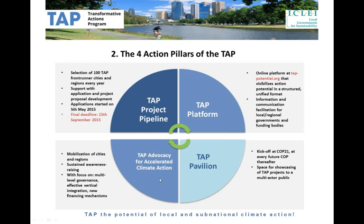Finally, the TAP advocacy for accelerated climate action will build on previous achievements in local climate advocacy and diversify and strengthen it in various ways. This work will seek to raise awareness of the potential of transformative local climate action, deepen the dialogue with national governments promoting effective vertical integration between different levels of government, reinforce engagement with international and national funding bodies and development agencies, and continue to coordinate information sharing on subnational climate finance on various forums.